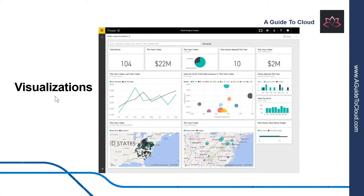The first building block is visualizations. A visualization is a visual representation of data, like a chart, a color-coded map, or other interesting things you can create to represent your data visually. Power BI has all sorts of visualization types, and more are coming all the time. This example shows a collection of different visualizations created in Power BI Service.